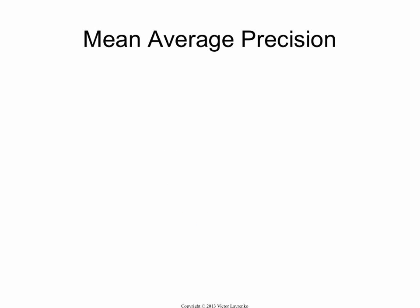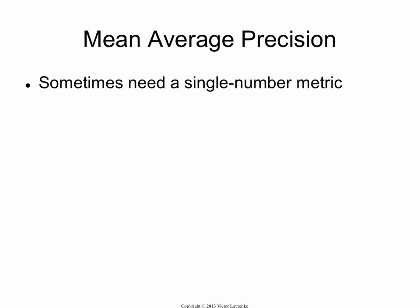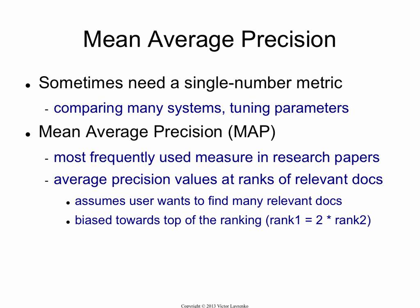The most commonly used number is something called mean average precision. It's the average of precision values at the ranks where you have relevant documents. The 'mean' in mean average precision comes from averaging over a bunch of different queries. The average precision itself, called AP, is the average of precisions in a single ranking.